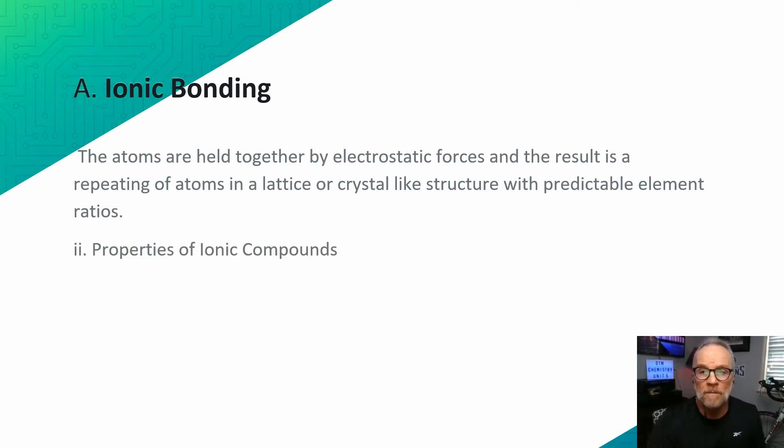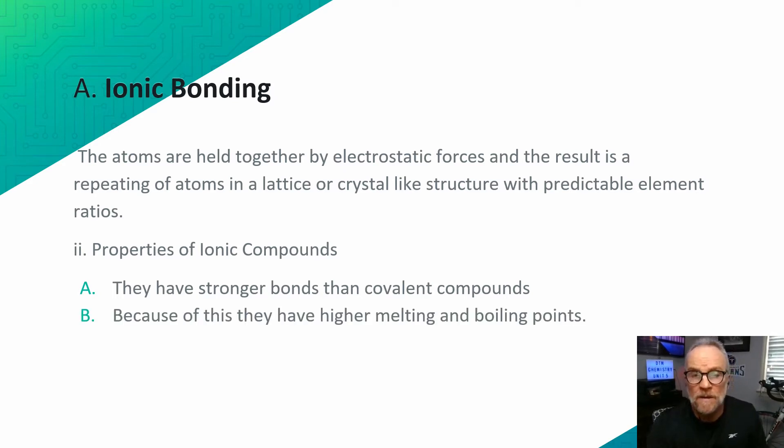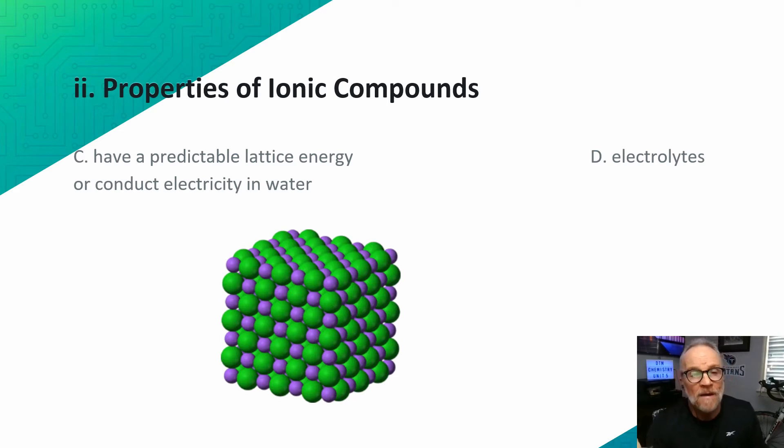Properties of ionic compounds: They have stronger bonds than covalent compounds. They have higher melting and boiling points as a result. They have a predictable lattice energy and they conduct electricity in water. They're electrolytes, which means they conduct electricity in water.